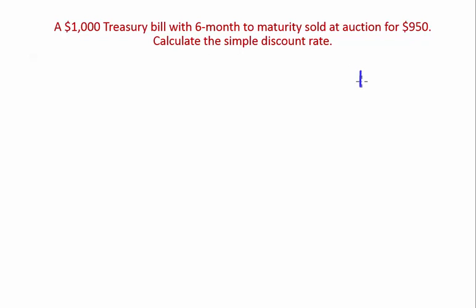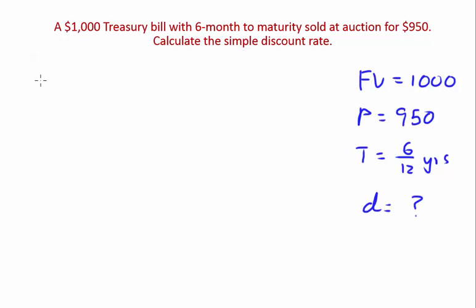A $1,000 Treasury bill with six months to maturity sold at auction for $950. Calculate the simple discount rate. Your face value is 1,000, your principal is 950, and your time is six on twelve years. You want to find your discount rate.